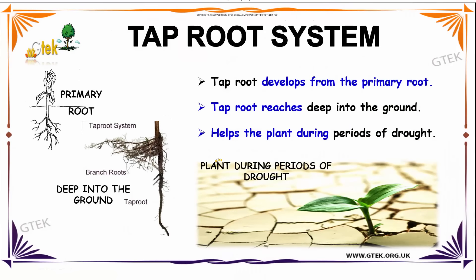Now we are going to discuss about Tap Root System. Tap Root System develops from the primary root and reaches deep into the ground. It helps the plant during periods of drought. You can see the tap root, the branch root — this is called the Tap Root System.